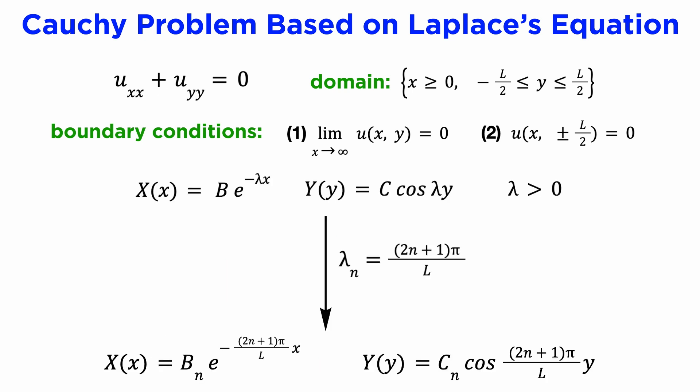By subbing this into our general solution, we can see that the allowable values of our separation constant lambda are given by 2n plus 1 times pi over L. Each of these values of lambda gives a different solution, all of which form an independent basis of solutions, and all will satisfy this boundary condition.